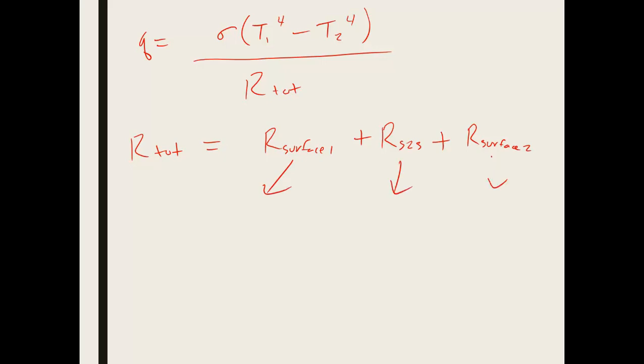We won't go into deriving these because this is meant to be just a sample problem. But this r surface 1 is 1 minus epsilon 1 divided by epsilon 1 times a1. The surface to surface is 1 over a1 times f12.